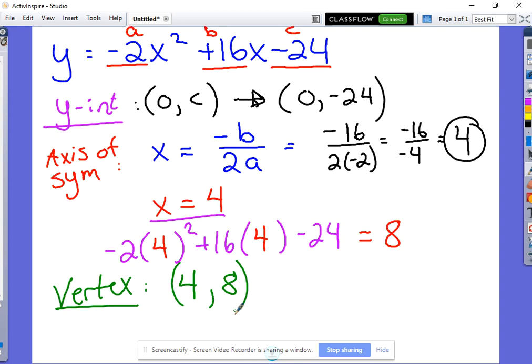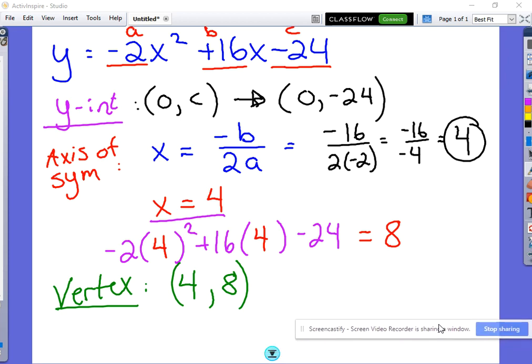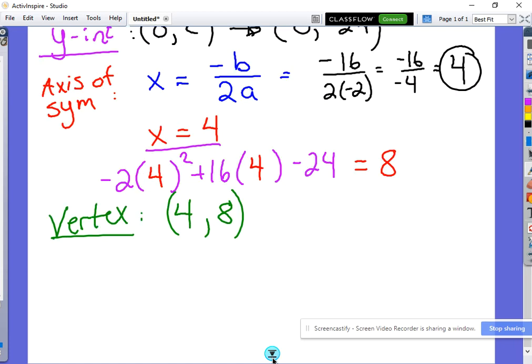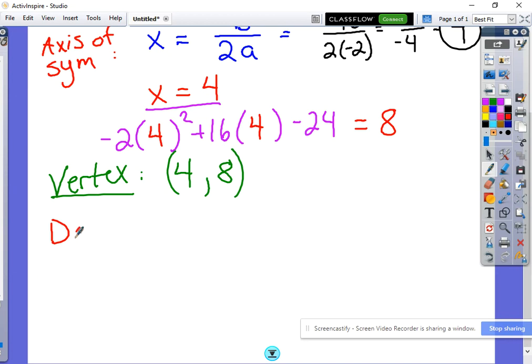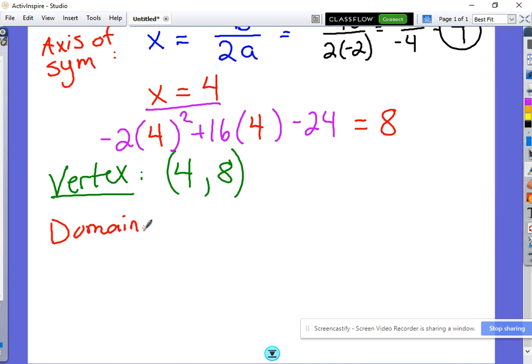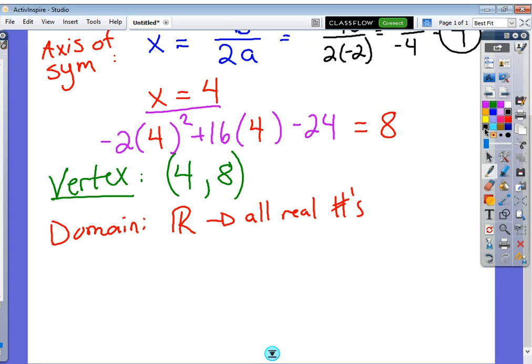We can talk about domain and range. Remember that our domain is always going to be the same thing. Our range is going to change based on what our parabola looks like. So our domain in this case, our domain for every single parabola under the sun is all real numbers. We use this sign to symbolize that. All real numbers. That basically just means you can plug anything you want to into your domain.